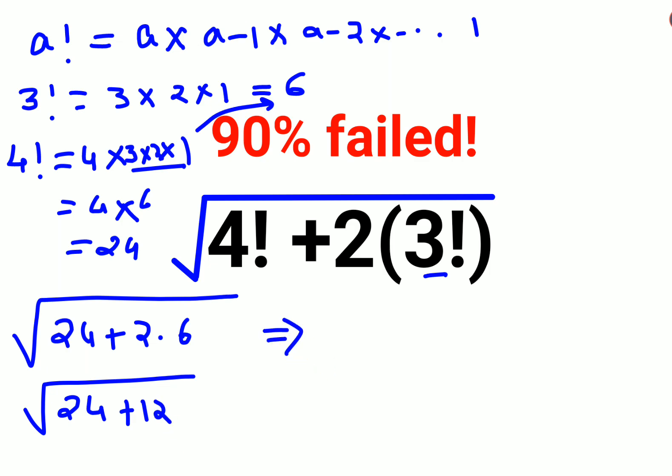That comes out to be root of 36. Now please understand, root of a positive number, if there is no variable involved, the answer will always be a positive 6 and not negative 6. Okay, that is absolutely incorrect. Only if there is a variable involved, then yes, you can take the negative value. But if you are just directly taking a root of a positive number, the answer will always be positive.